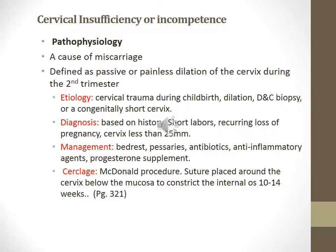Incompetent cervix can be a cause of miscarriage. It is defined as passive or painless dilation of the cervix during the second trimester. Etiology includes cervical trauma during childbirth, dilation, D&C, biopsy, or a congenitally short cervix. Diagnosed based on history, short labors, recurring pregnancy loss, or a cervix that's less than 25 millimeters. Management is bed rest, antibiotics, anti-inflammatory agents, and progesterone supplements. Cerclage can be done — the McDonald's procedure — where a suture is placed around the cervix below the mucosa to constrict the internal os at 10 to 14 weeks of pregnancy. This information is on page 321 of your textbook.